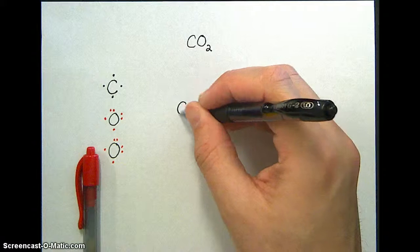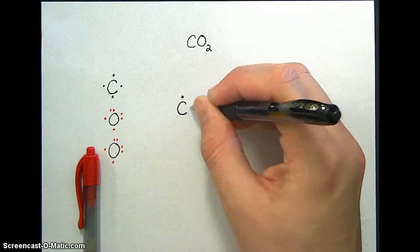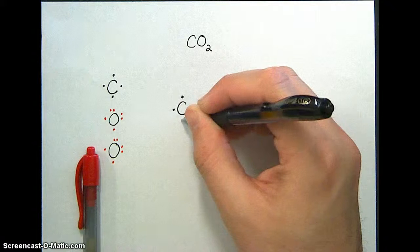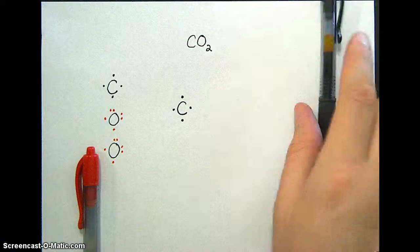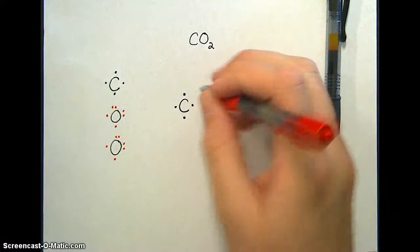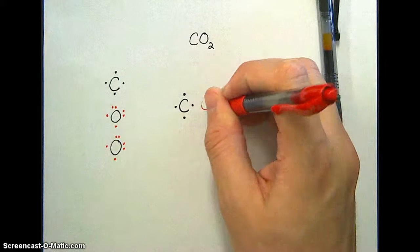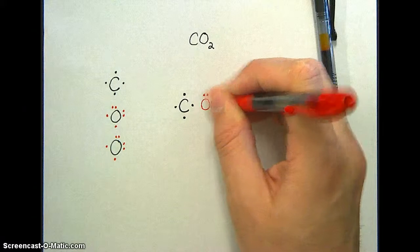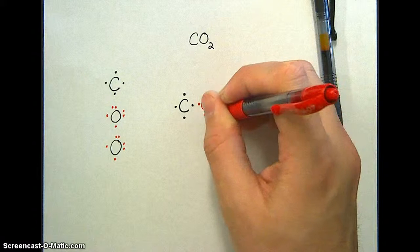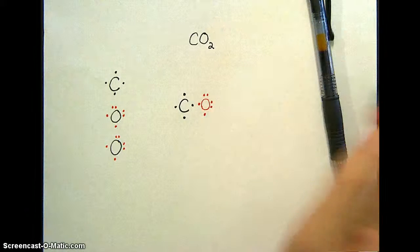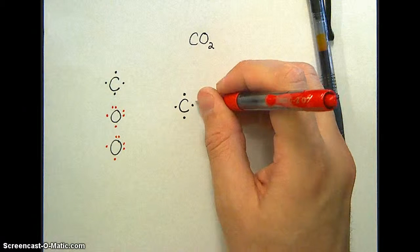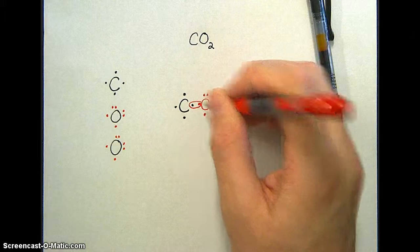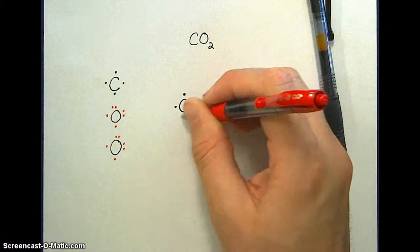I'm going to draw a carbon here. Put 1, 2, 3, 4 electrons around it. And then I'm going to put one of the oxygens right here. I'm going to copy its electrons as well. And you'll notice I have a pair of electrons right here that could be shared. And I have a pair right here that could be shared.